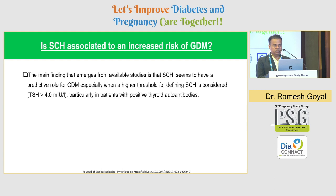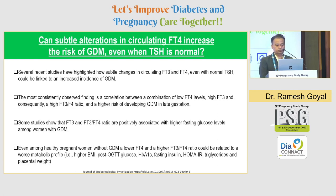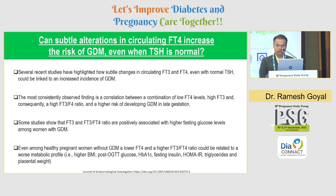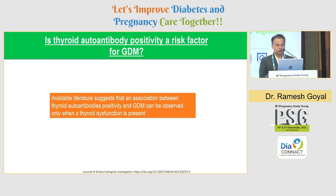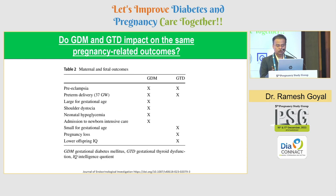Is subclinical hypothyroidism associated with an increased risk of GDM? Yes — but only when the patient has subclinical hypothyroidism with TSH greater than 4 and positive autoantibodies. Can subtle alteration in circulating free T4 increase the risk of GDM even when TSH is normal? Yes — if the free T3 and free T4 ratios are high even with normal TSH, there is an increased risk of GDM. Is thyroid autoantibody positivity a risk factor for GDM? The literature suggests that an association between thyroid autoantibody positivity and GDM can be observed only when thyroid dysfunction is present — the main criterion is TSH greater than 4.